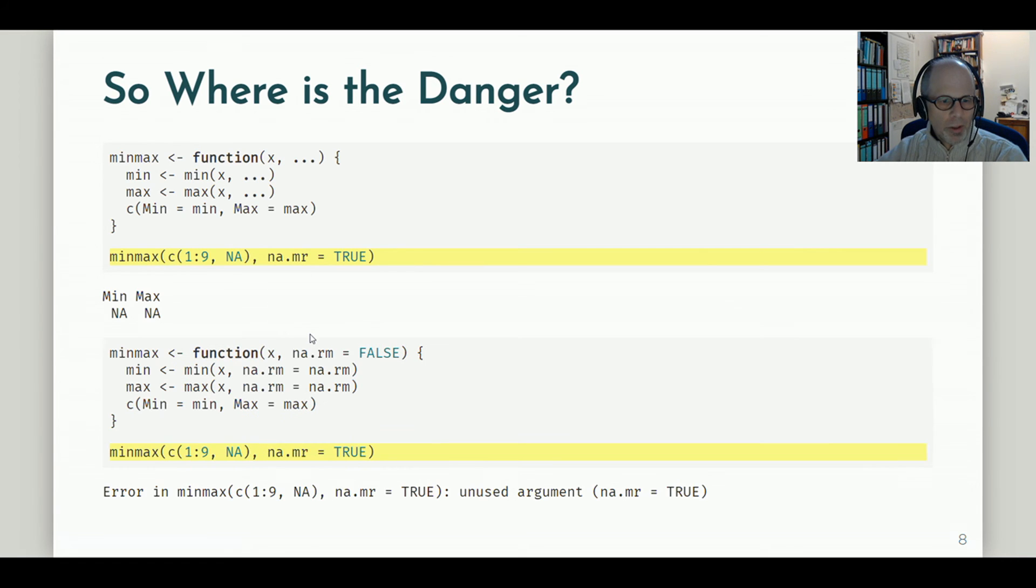So let's compare this to the previous version of our function, not using the three dots, but the explicit na.rm argument. So we saw this version before and I use it the same way as above, mistyping the function argument na.mr instead of na.rm. And in this case I get an error message back, unused argument.